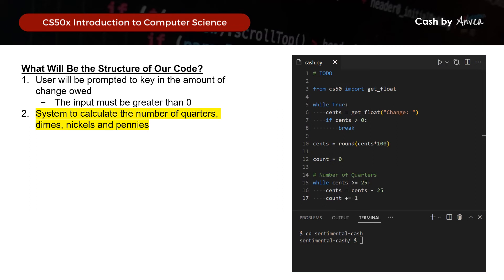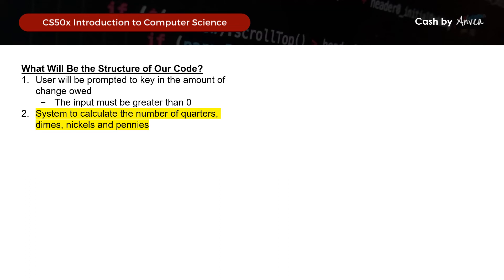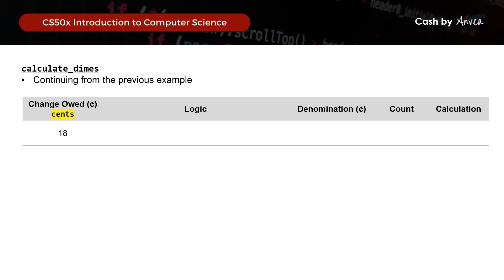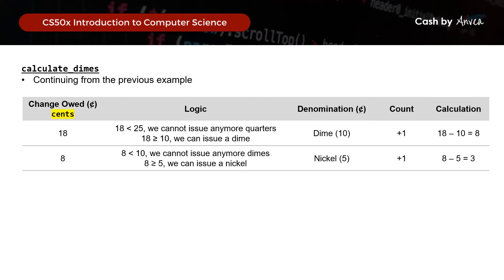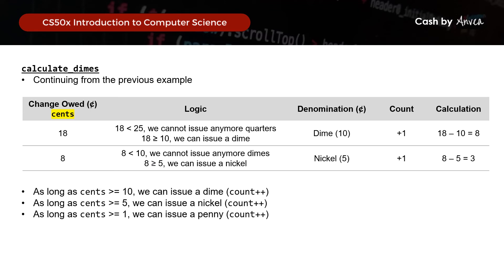Just by looking at the quarters logic, you should be able to work out the rest for dimes, nickels, and pennies — give that a shot before moving on. Continuing from the example where the balance is 18 cents: since it's greater than 10 we issue a dime, then issue a nickel, and finish by issuing 3 pennies since the remaining cents is 3. So: as long as cents is greater than or equal to 10, issue a dime; greater than or equal to 5, issue a nickel; greater than or equal to 1, issue a penny. Update the count throughout.